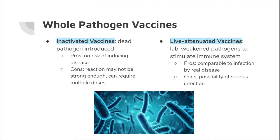Whole pathogen vaccines can be divided into inactivated and live attenuated vaccines. Inactivated vaccines introduce dead pathogens to your body, but the immune response may not be as strong because the pathogen is dead. Live attenuated vaccines introduce weakened pathogens and are more comparable to infection by the real disease. However, because they are still alive, they have a chance of introducing a serious infection.